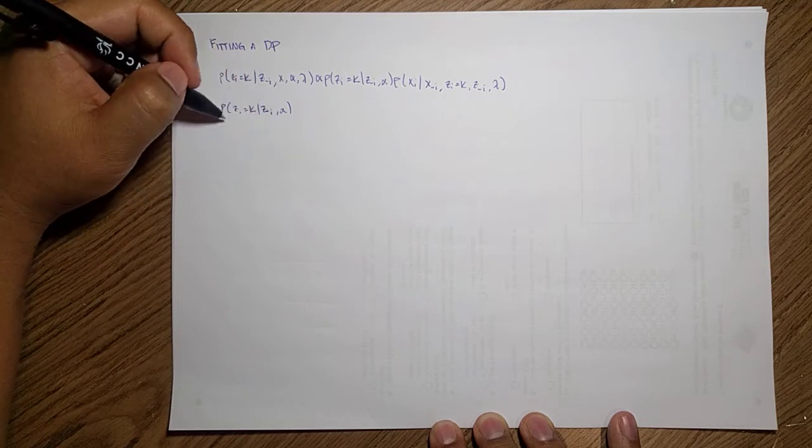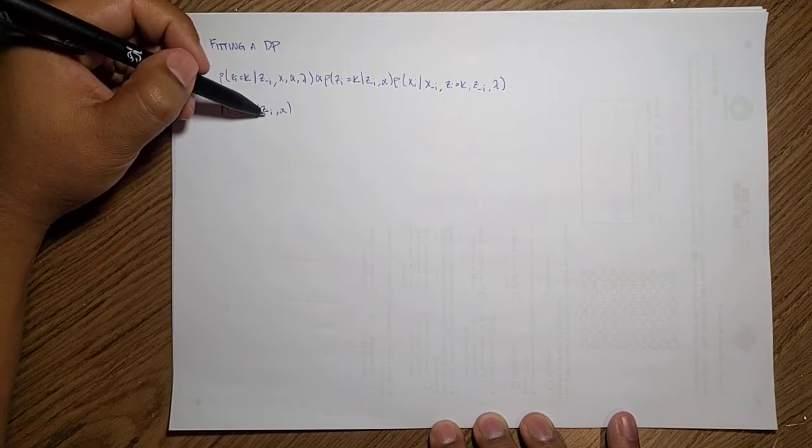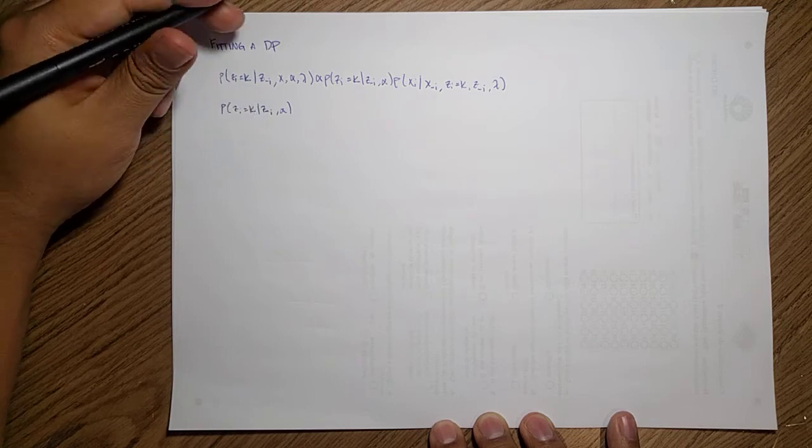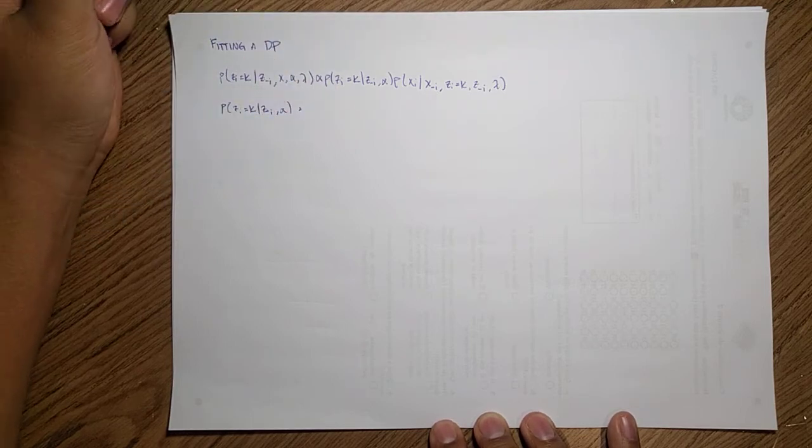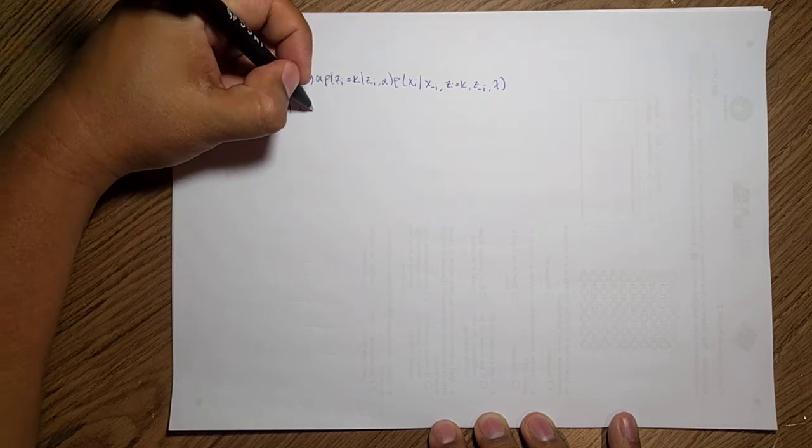What is the likelihood of belonging to a given cluster given all the other latents and our alpha? This marginal, as we saw before, will correspond to a Dirichlet process.